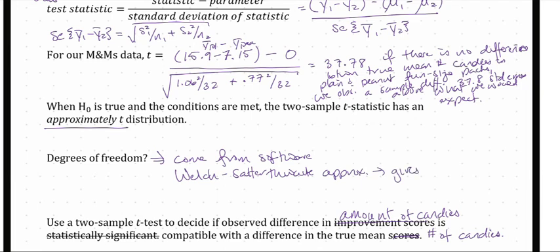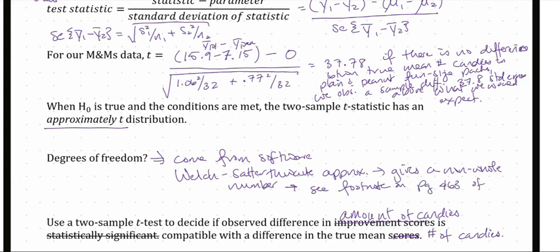The degrees of freedom will come from the software. If we can make some assumptions, it's easy to find, but when we don't satisfy those assumptions — which happens more often than not — we use a really complex formula called the Welch-Satterthwaite approximation. That gives us a non-whole number, and a t-distribution calculator requires whole-number degrees of freedom. You can see the footnote on page 463 of the text. JMP will calculate the degrees of freedom automatically for us, so we don't have to worry about it.